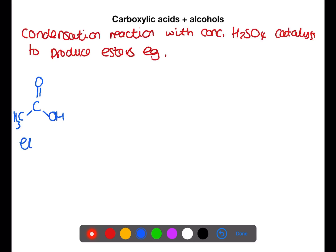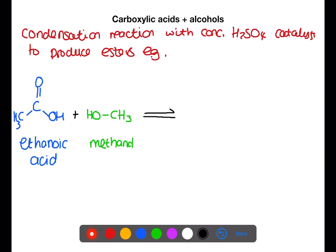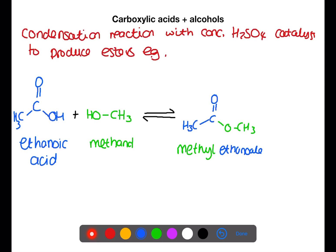In this example we have ethanoic acid reacting with methanol. The OH from the ethanoic acid will be removed, and the H from the hydroxyl group on the methanol will also be removed — these join to form water. The C double bond O will then join to the oxygen of the methanol to form the ester link. The ester is named by taking the alcohol's name, methanol, removing the ending and replacing with -yl to form methyl, then ethanoic acid forms the end of the name by changing to ethanoate, giving us the ester methyl ethanoate. Water is also produced in the condensation reaction.